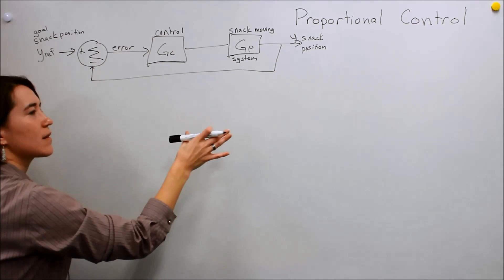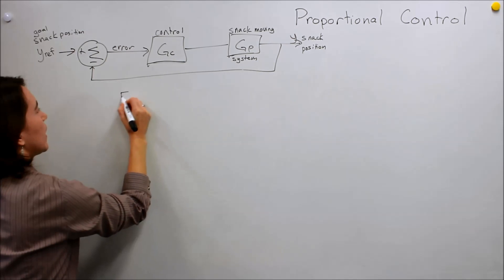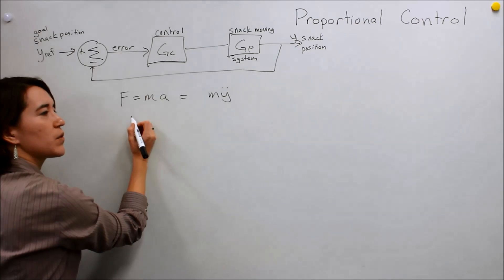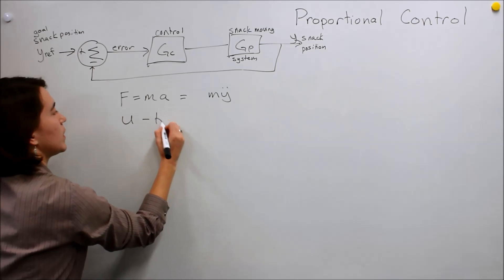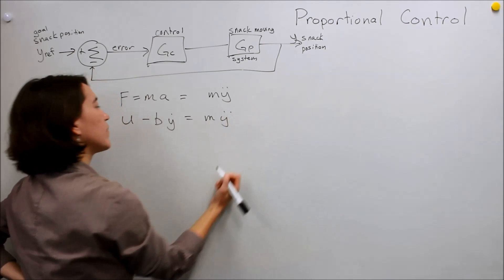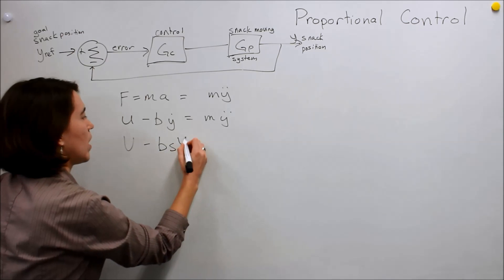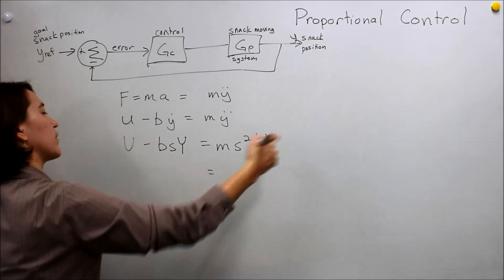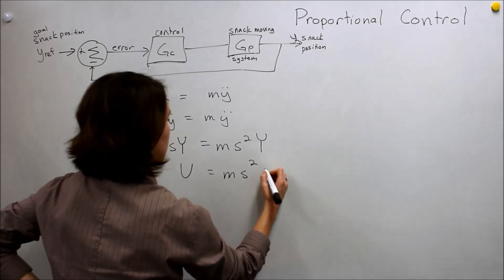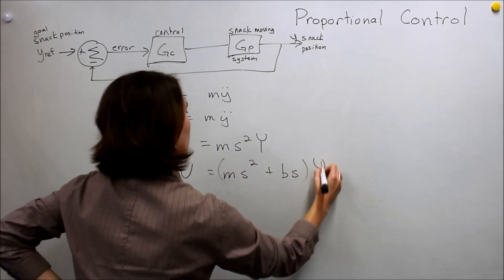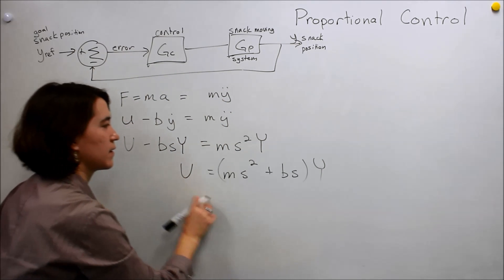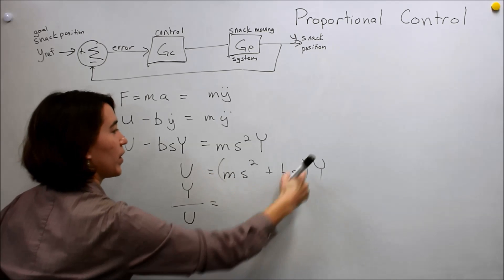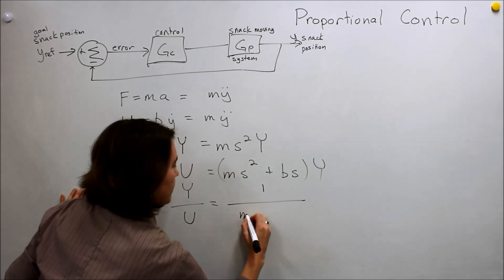So, our snack moving system is our input. So, F equals MA, I'm going to do this quickly, because I think everybody knows how to do it very well already. Our forces here were equal to U, the input, minus B Y dot, equals M Y double dot. Take the Laplace transform of that. U minus BS Y equals MS squared Y. We want to get the output over the input, so we can move this over there. So, we get MS squared plus BS. This is our Y. And then we want output over input, so we'll move this over here and move that over there. And we will get Y over U equals 1 over this value.